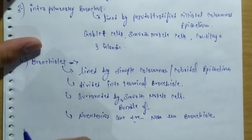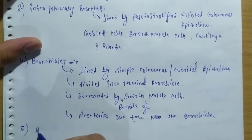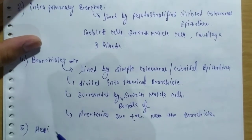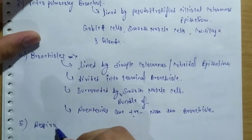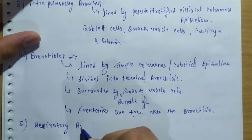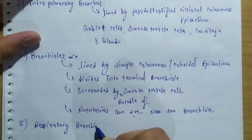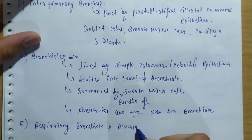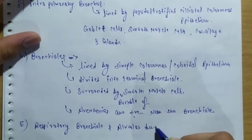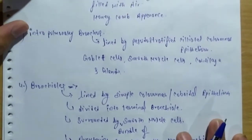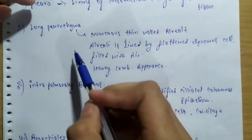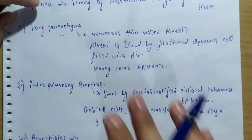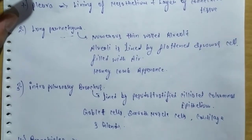After this, respiratory bronchiole and alveolar duct. Some authors include respiratory bronchiole and alveolar duct in lung parenchyma. And now we draw the diagram of histology of lung. Firstly we draw pleura.